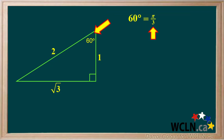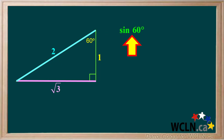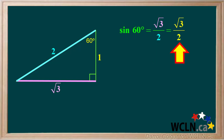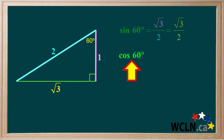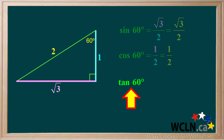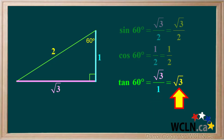Now we'll consider the 60-degree angle. 60 degrees is 60 times pi over 180, or pi over 3 radians. The sine of 60 degrees is the opposite side over the hypotenuse, which is the square root of 3 over 2. So the exact sine of 60 degrees is root 3 over 2. The cosine of 60 degrees is the adjacent side over the hypotenuse, which is 1 over 2, so the exact cosine of 60 degrees is 1 half. The tangent of 60 degrees is the opposite side over the adjacent side, which is root 3 over 1.